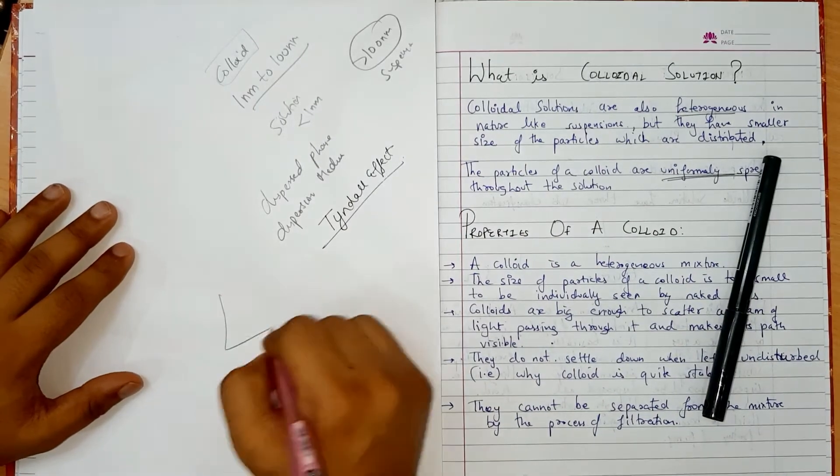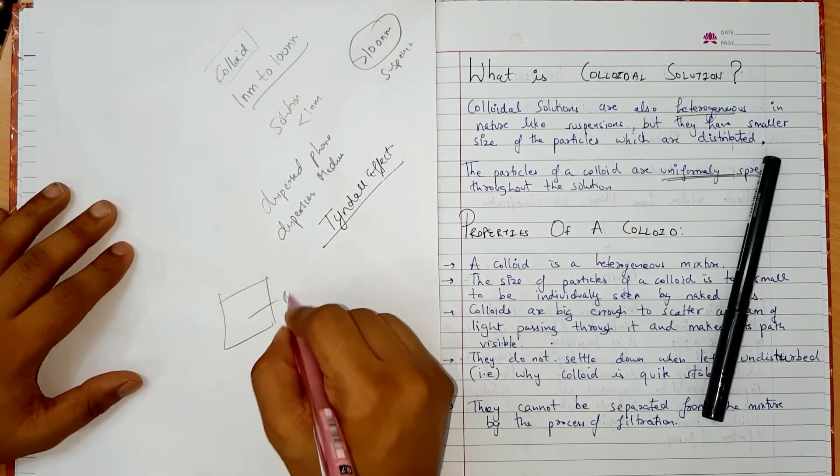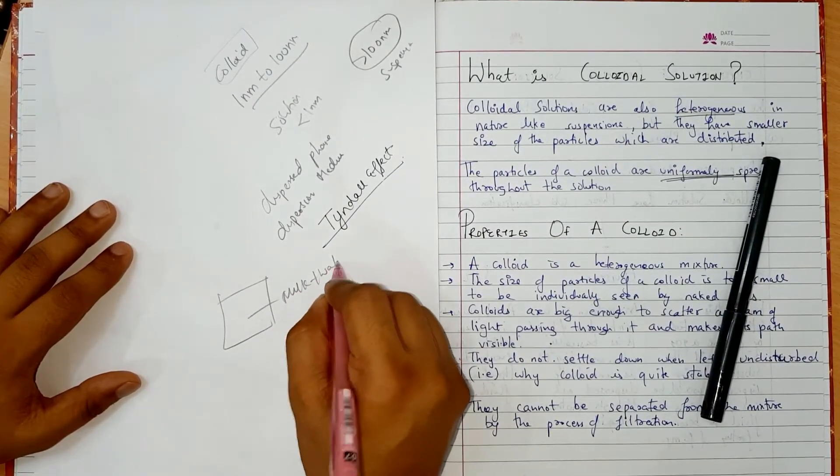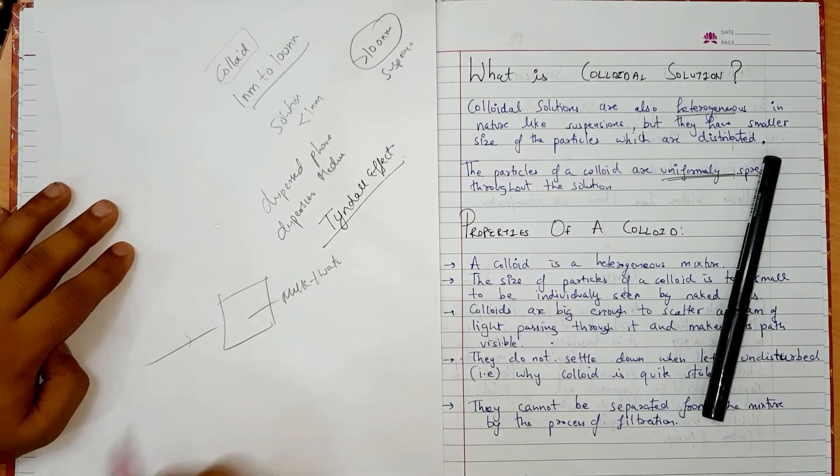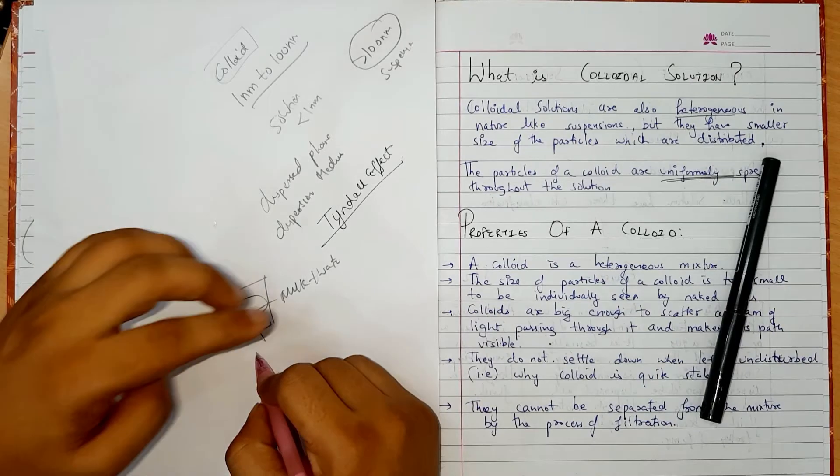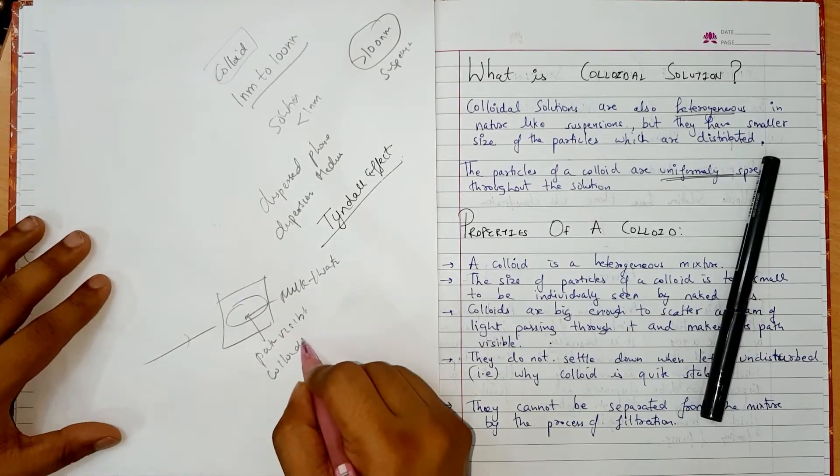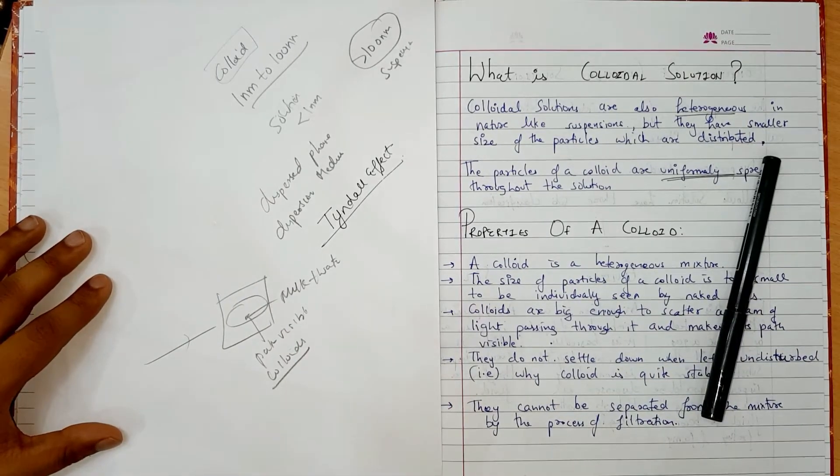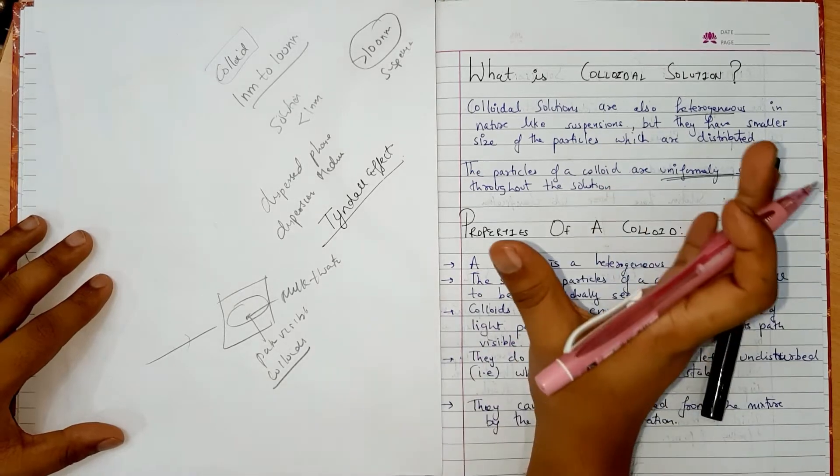This example I have taken in the previous video. There is a glass, I have taken in it milk solution, milk plus water. Light will pass here. So when the solution goes inside, then light will be visible because it is a colloidy solution. The size of the particle is bigger as compared to the solution.